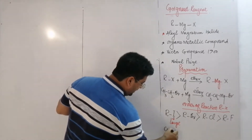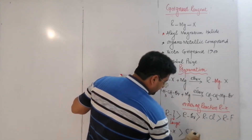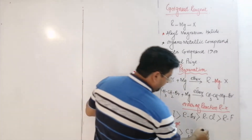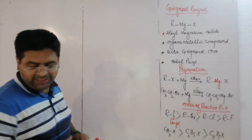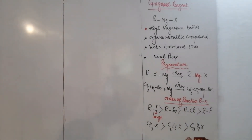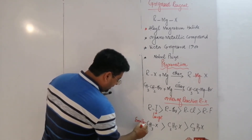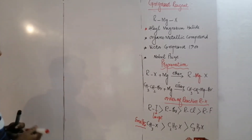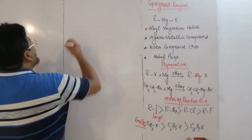What about the alkyl group? A larger alkyl group, such as in C3H7X, has lower reactivity for forming Grignard Reagent compared to smaller alkyl groups. So we conclude: the smaller the alkyl group and the larger the halogen group, the more easily Grignard Reagent will be formed.